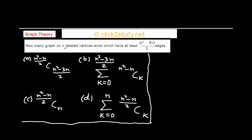The next problem is: how many graphs on n labeled vertices exist which have at least n² minus 3n/2 edges? So you have to find the number of graphs on n labeled vertices where those graphs have at least n² minus 3n/2 edges. These are the options and one is correct. Note that C here stands for 'choose' from combinatorics — for example, (n²-n/2) C (n²-3n/2).